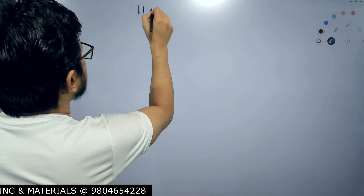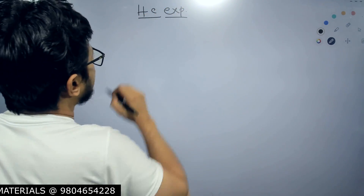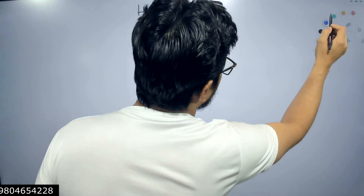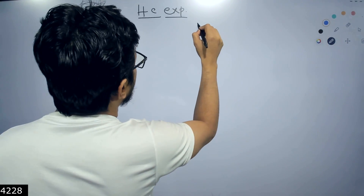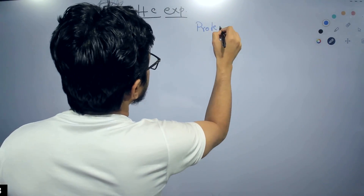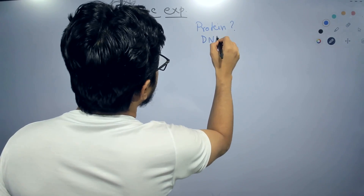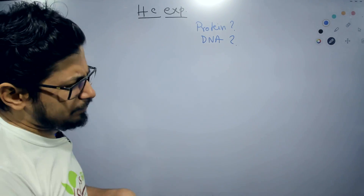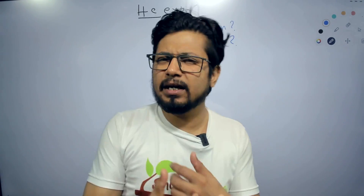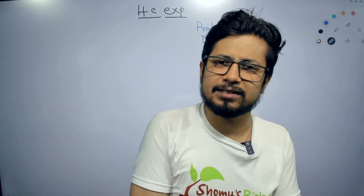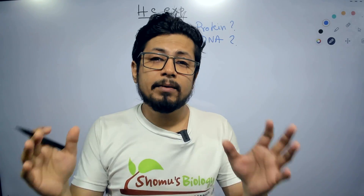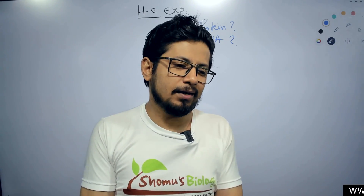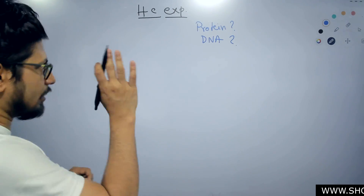In this experiment, why they performed it is basically to answer the question of whether a protein or a DNA acts as genetic material. Is it the protein or is it the DNA? The debate was there for a long time, with various research institutes and scientists doing experiments. Finally, this experiment by Hershey and Chase concluded the idea of DNA as a genetic material, not the protein.